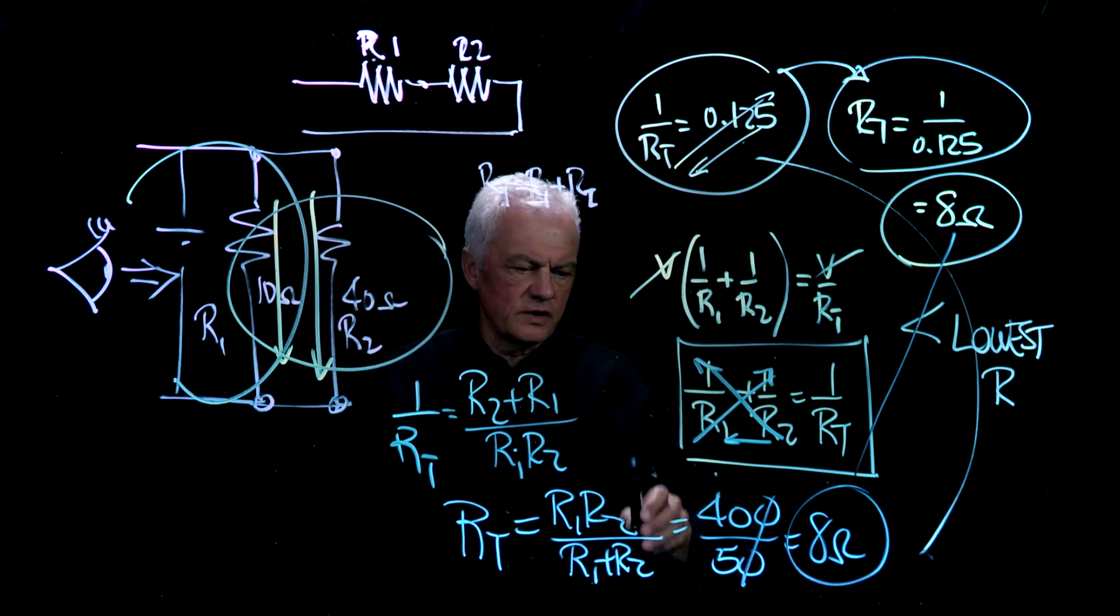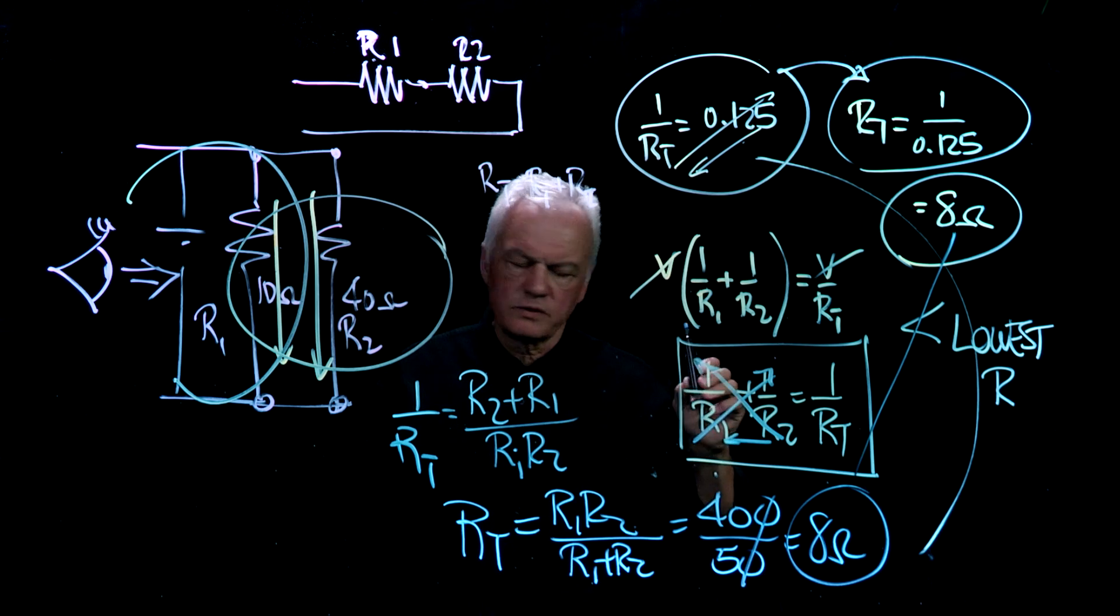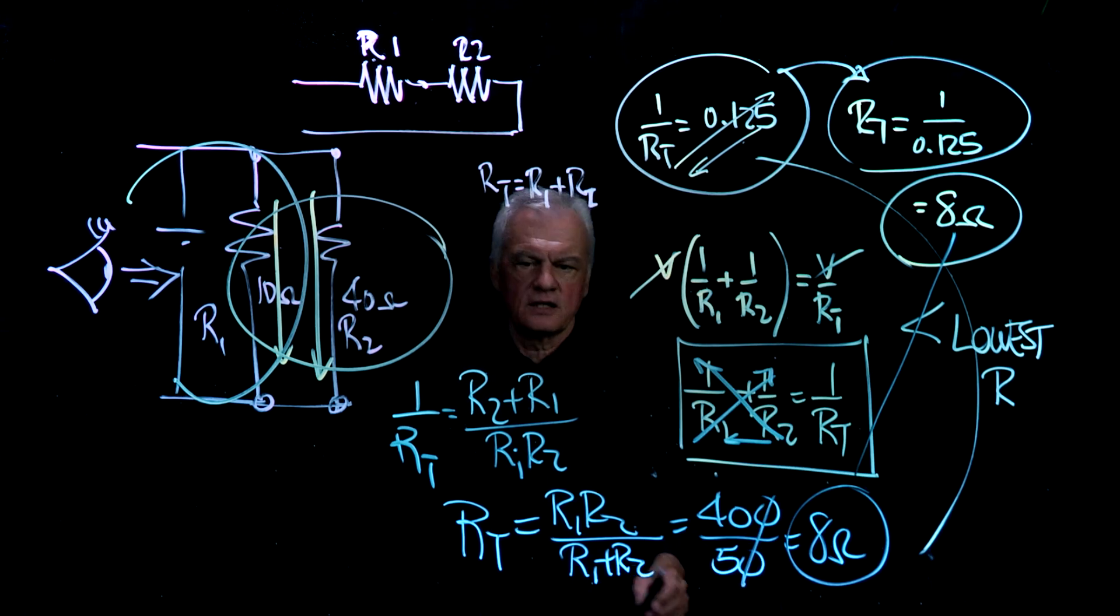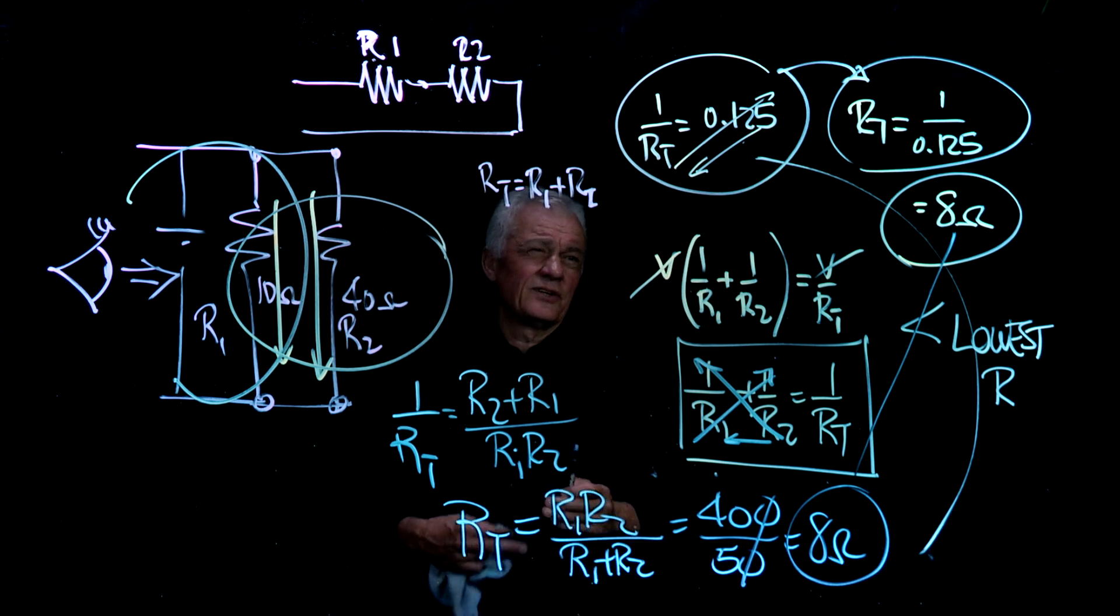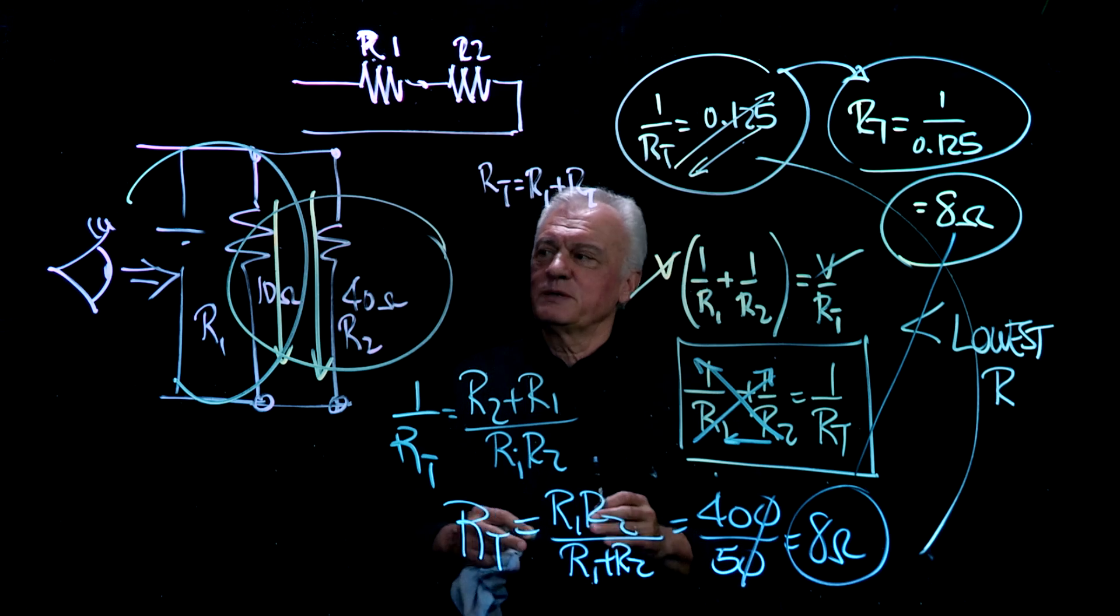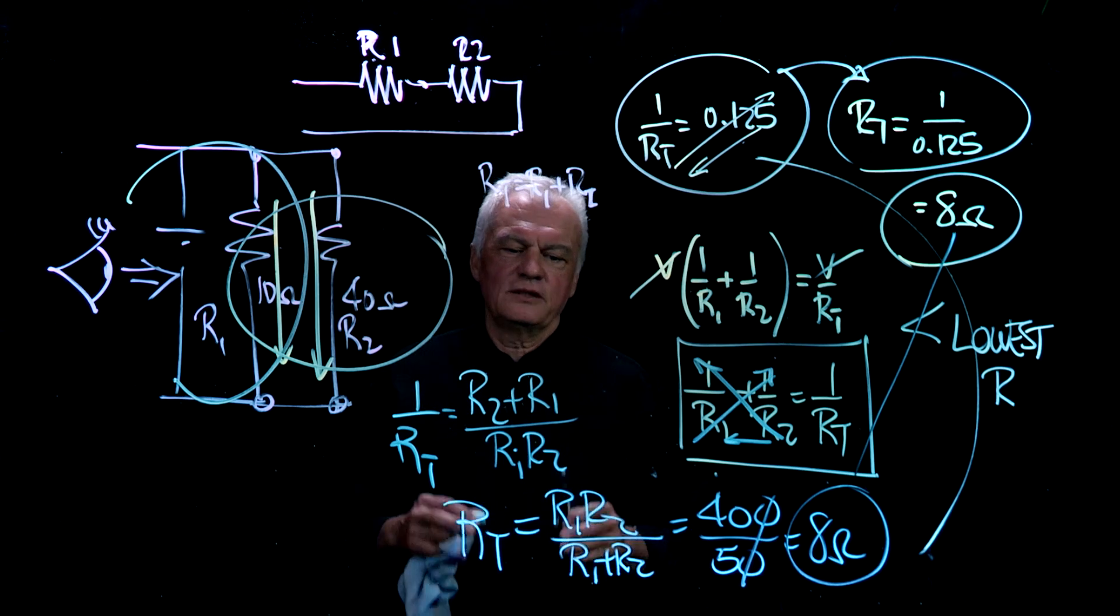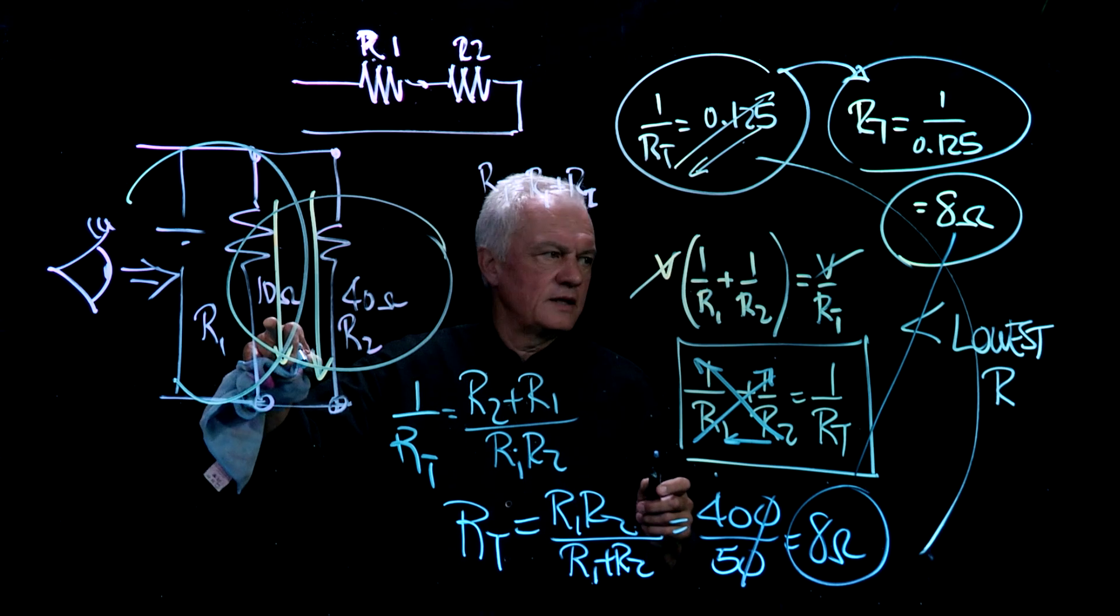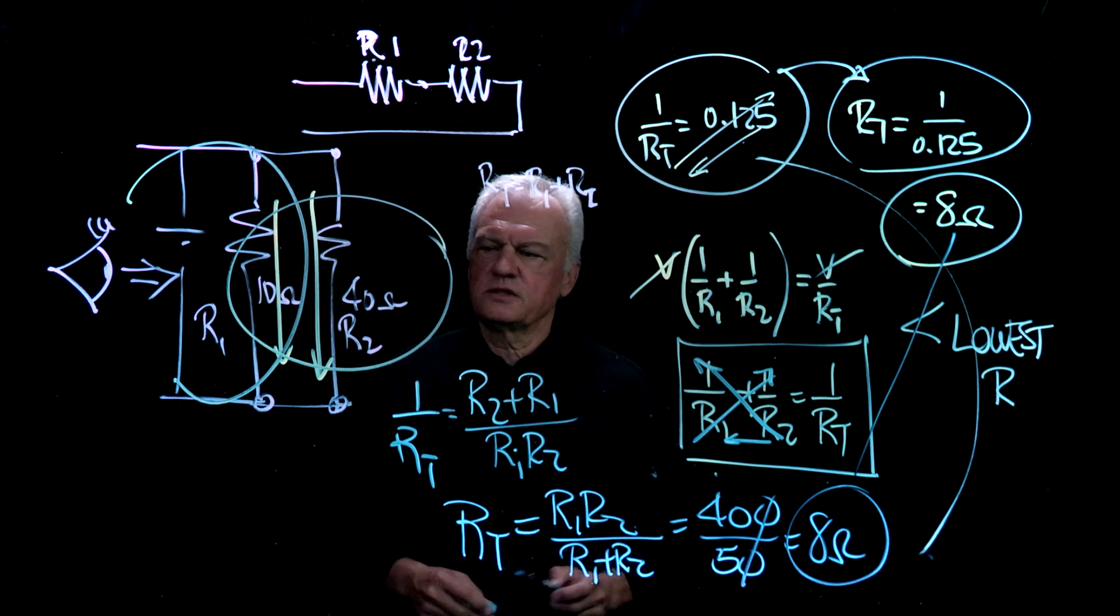As far as 1 over RT is equal to 1 over R1 plus 1 over R2 plus 1 over R3 plus 1 over R4 plus 1 over, as long as you get out there it'll always hold. And so your calculator should be able to handle it. The only thing is, please make sure that when you're punching those buttons, that you're stopping to make sure that the lowest resistor is more than the result that you will get.